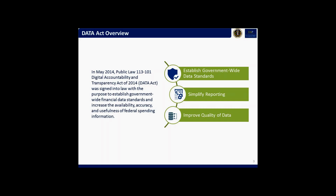Because of the purpose of this conversation, we really wanted to drill into the impact of the Data Act on recipients as federal reporting entities pursuant to your grants. There's been a lot of conversation — and frankly not linear — about how the Data Act affects grantees. The three major areas that potentially could affect grant recipients are: government-wide data standards, our efforts to simplify reporting, and our work to improve the quality of the data.